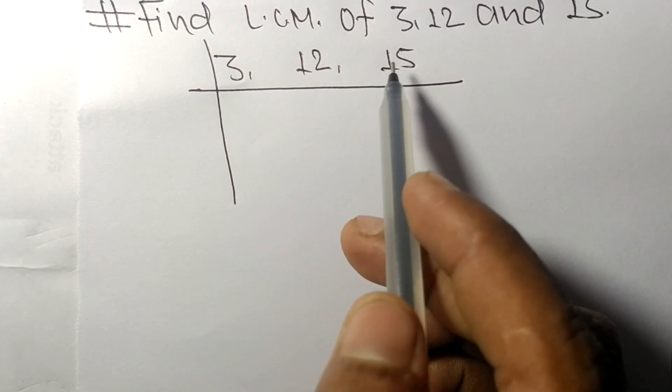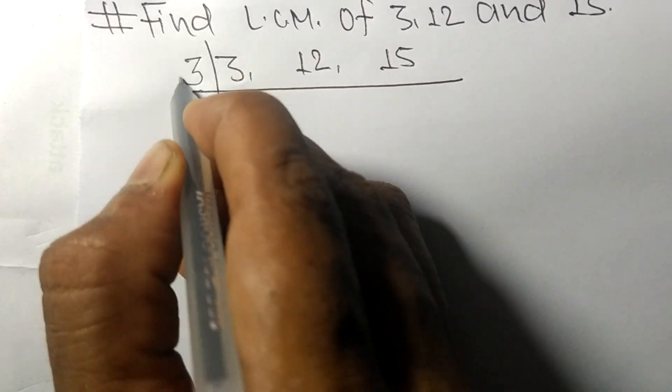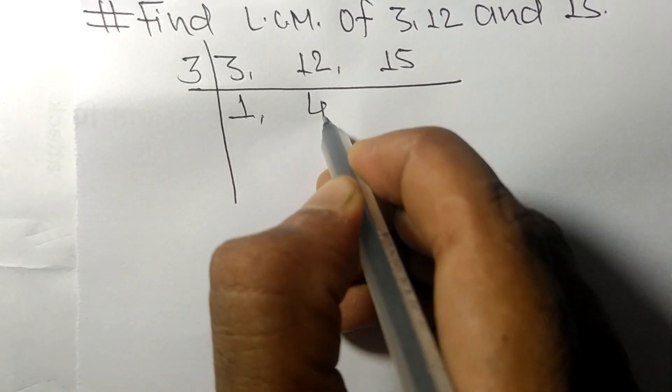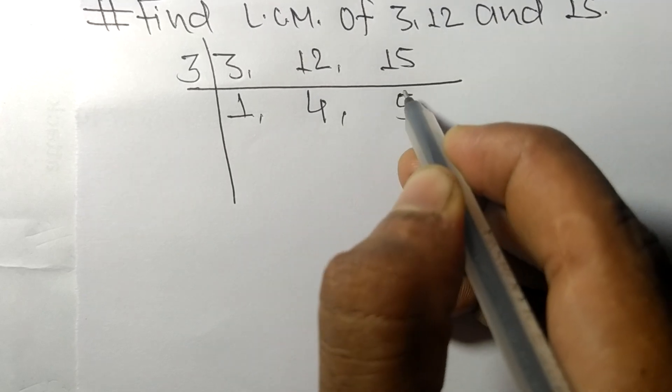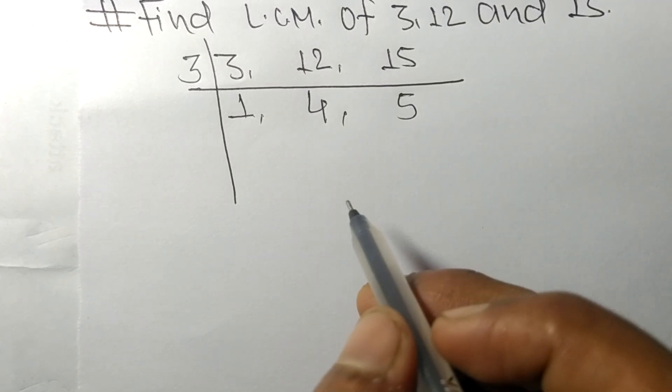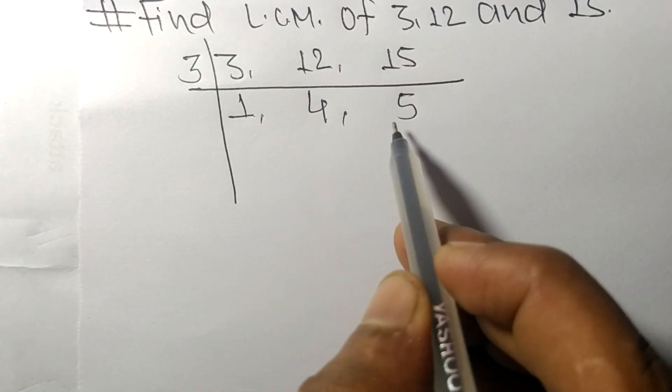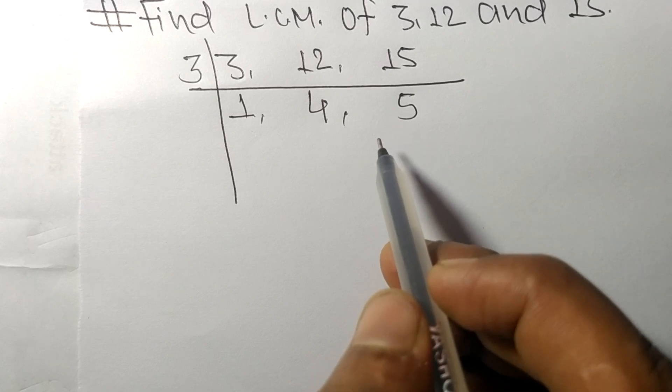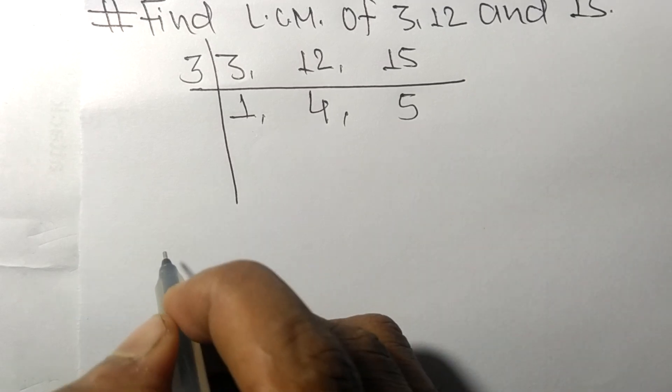These all numbers are divisible by 3. 3 times 1 means 3, 3 times 4 means 12, 3 times 5 means 15. So now we got 1, 4, and 5, which are not exactly divisible by the same number.